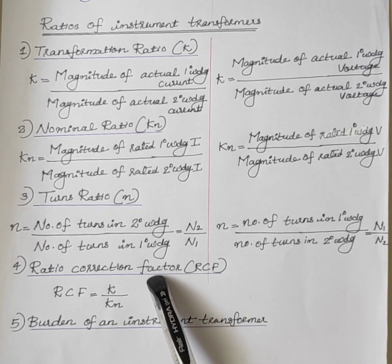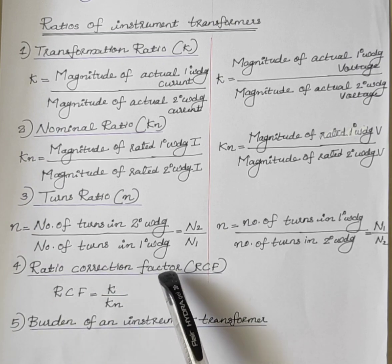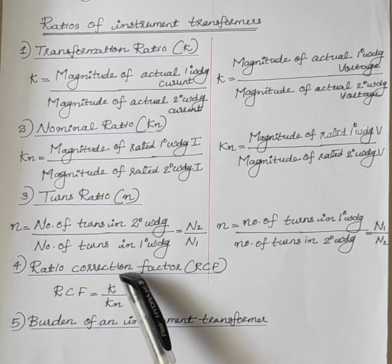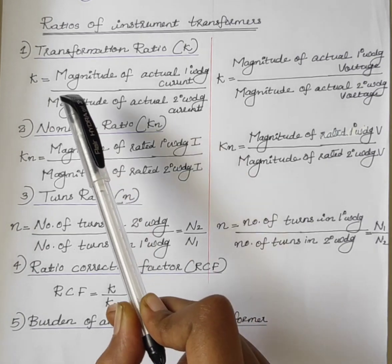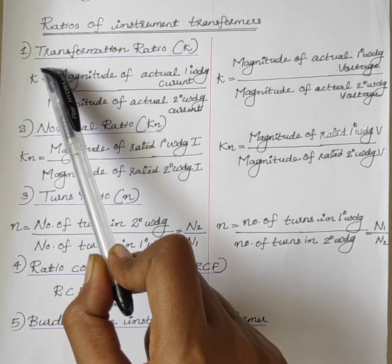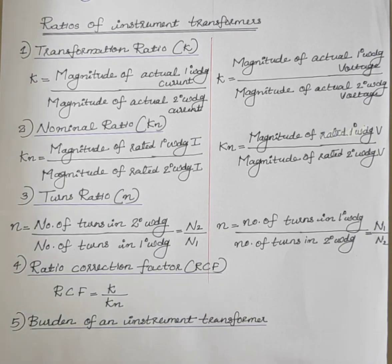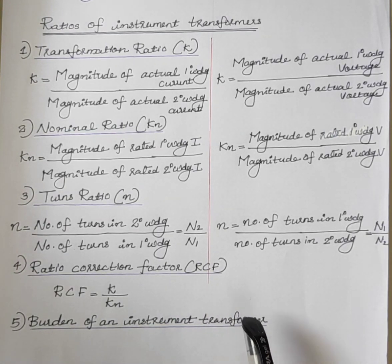The fourth one is the ratio correction factor, RCF. It is the ratio of the transformation ratio to the nominal ratio.